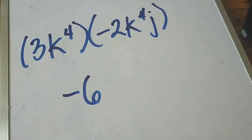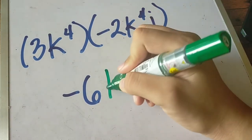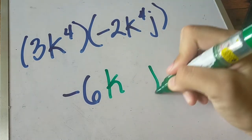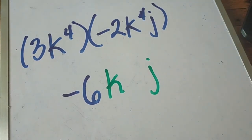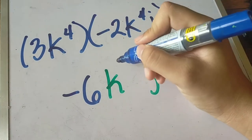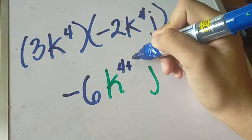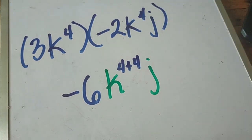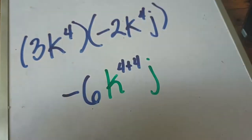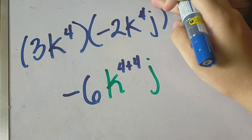Now proceed to the variables. This is the crucial part because we are going to apply the laws of exponent. What variables are present? We have k and j. We are now going to copy the exponent of k and add them. We have 4 here plus 4 over there. Next is the j. There's no j present here on this side, and here the exponent is 1, so we're just going to copy that.